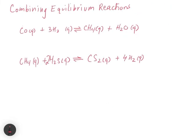In the final part of this video, we're going to look at what happens when we combine two equilibrium reactions. So what we have is we have two equilibria here. One is the reaction of carbon monoxide with hydrogen to make methane and water, and the other one is the reaction of methane with hydrogen sulfide to make hydrogen and carbon sulfide.